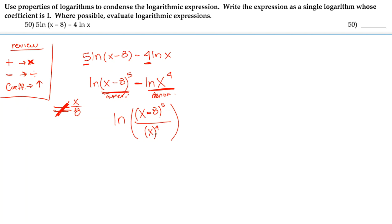So there's nothing else you can cancel out of here. You can't cancel out an x^4 and an x^4 here because these are not the same factors. This one is x and this one is x minus 8. So this is the most condensed this logarithmic expression can be, using the properties of logarithms that we have here.